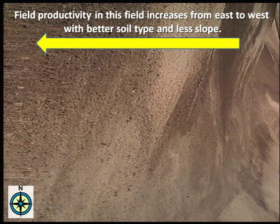The productivity of a field can vary significantly from one edge to the other due to soil type, slope, previous history, and other factors. This illustration shows how productivity in this field increases from east to west with better soil and less slope.